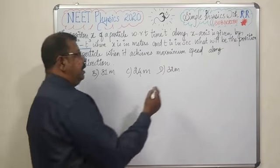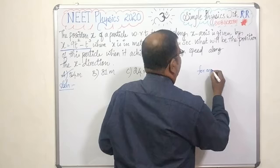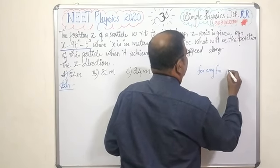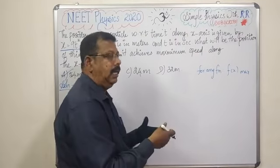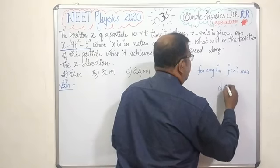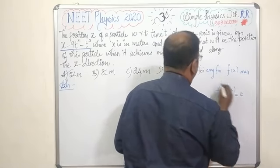For any function f of x to be maximum, the derivative d of f of x divided by dx should be equal to 0. This is our condition.